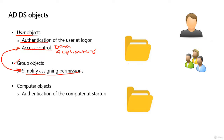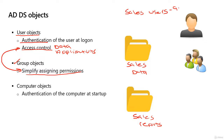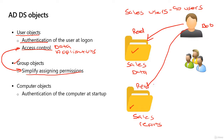Let's say I have a folder called 'sales data' and another folder called 'sales reports.' In my sales department, I have 90 employees that work in sales. So, 90 people need access to the sales data and the sales reports. What you could do — which would be extremely painful — is go to the sales data folder and assign permissions to those 90 users individually, giving each one read access. But then you have to do that for the other 89 users and for every single piece of data you want them to access. That is incredibly inefficient.